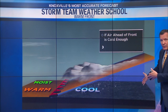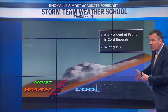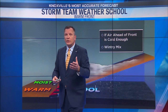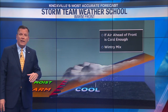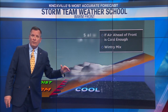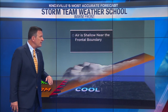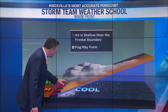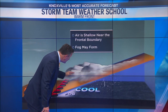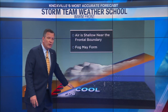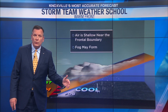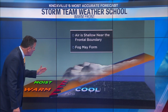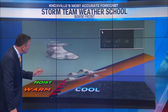If the cold air in place is cold enough, that precipitation may form as a little bit of a wintry mix. Sometimes we see that in the wintertime as the warm front is to our south and the cold air is in place. If the air is shallow near that frontal boundary, we could see frozen precipitation make it all the way down toward the ground.